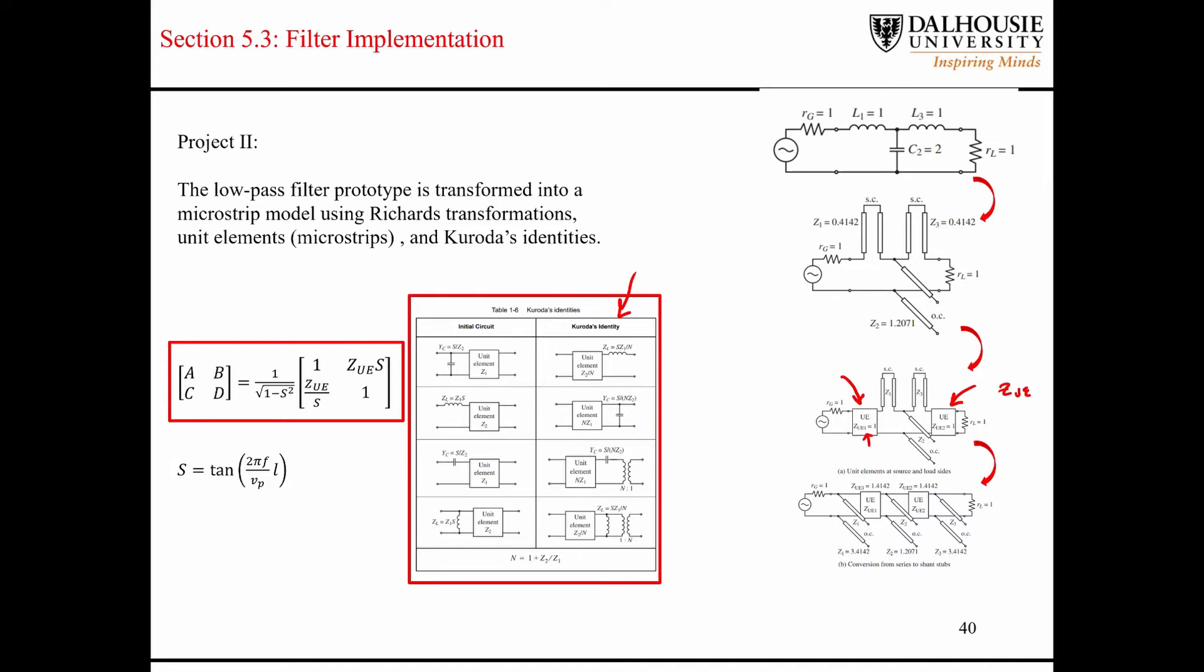Basically, whenever you see this little unit element moving around the circuit, think of it like it's literally like a little piece of the transmission line with a certain characteristic impedance. This entire design approach is based on figuring out the characteristic impedances of all of these different stubs and all of these little sections of transmission lines.